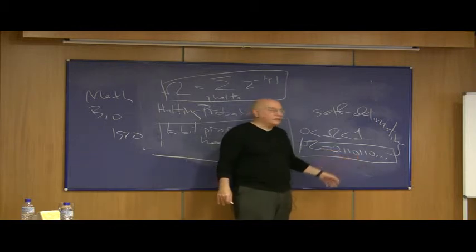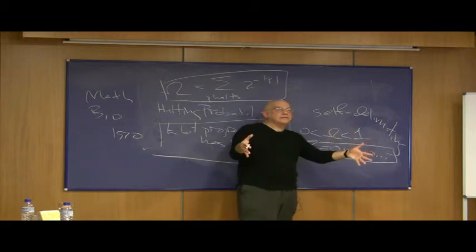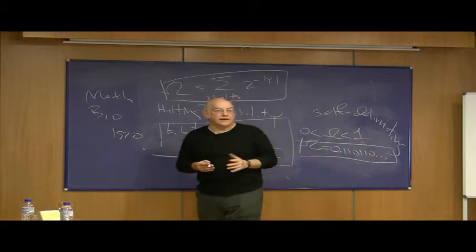So in other words, essentially the only way to prove what these bits are is to add that to your axioms, but you can prove anything by adding it to your axioms.